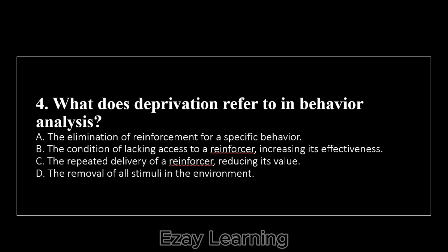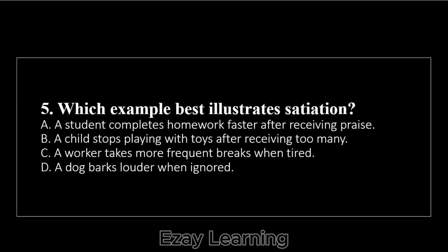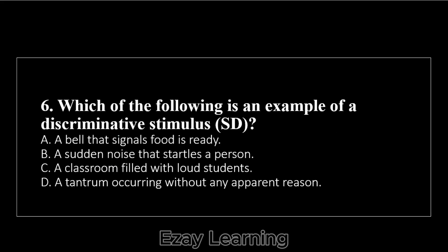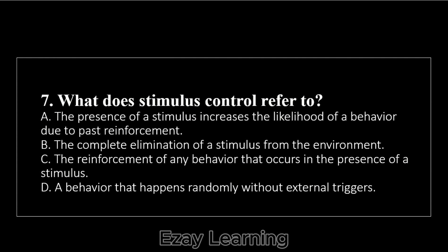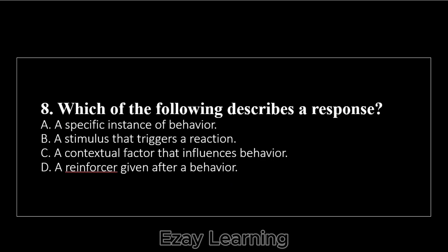What does deprivation refer to in behavior analysis? Answer: the condition of lacking access to a reinforcer, increasing its effectiveness. Which example best illustrates satiation? Answer: a child stops playing with toys after receiving too many. Which of the following is an example of a discriminative stimulus (SD)? Answer: a bell that signals food is ready. What does stimulus control refer to? Answer: the presence of a stimulus increases the likelihood of a behavior due to past reinforcement. Which of the following describes a response? Answer: a specific instance of behavior.